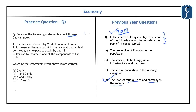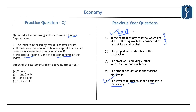The practice question reads: consider the following statements about the human capital index. First, this index is released by the World Economic Forum. Second, it measures the amount of human capital that a child born today can expect to attain by the age of 18 years. Third, per capita income is one of the components of this index. The human capital index is sometimes compared with the human development index, which measures human development in society.